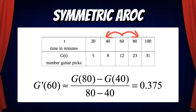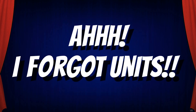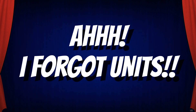Note that in all three examples, I'm using an approximately equals sign. Because we're not finding the exact value of g prime of 60, we're using various average rates of change to approximate g prime of 60. For all three calculations though, I forgot to include units.